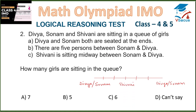Shivani is sitting midway between Sonam and Divya. So how many girls are sitting in the queue? Let us count: 1, 2, 3, 4, 5, 6, 7. So 7 girls are sitting in the queue, which is in option A.